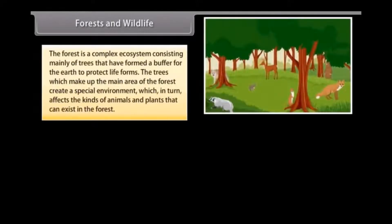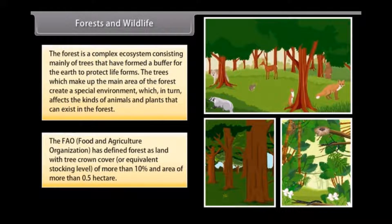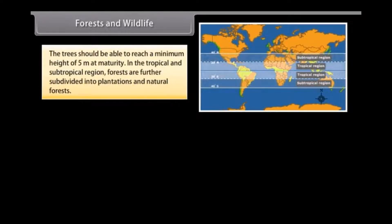The forest is a complex ecosystem consisting mainly of trees that have formed a buffer for the earth to protect life forms. The trees which make up the main area of the forest create a special environment which in turn affects the kinds of animals and plants that can exist there. The FAO has defined forest as land with tree crown cover of more than 10% and an area of more than 0.5 hectares, with trees able to reach a minimum height of 5 meters at maturity.